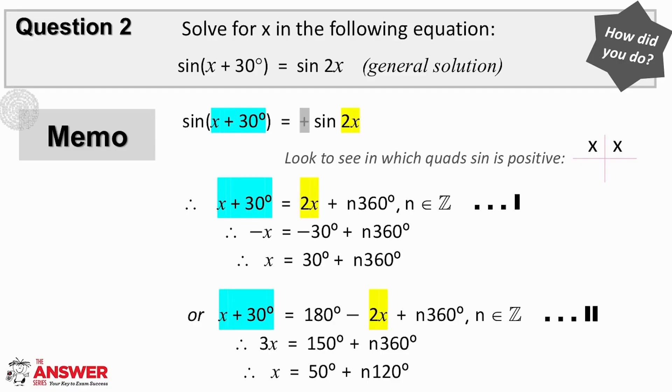So, starting with the first step, here we have sin of this angle equals positive sin of this angle, which means it is an example of a type 2 equation. Next, we identify the reference angle as 2x. It is usually simplest to make the angle on the right hand side the reference angle.